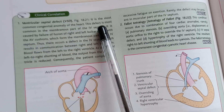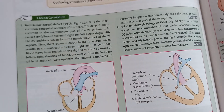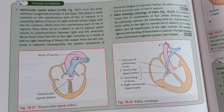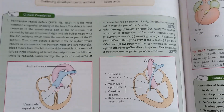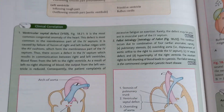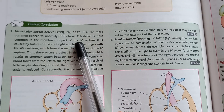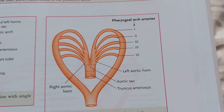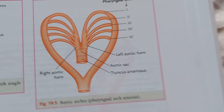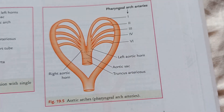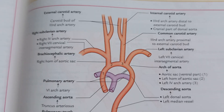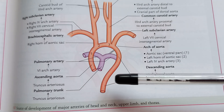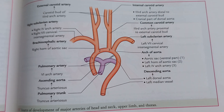Yes, it is the interventricular septum. This is also how the aortic arches develop — this is important for you. They have shown the development of these arteries clearly in the diagram.